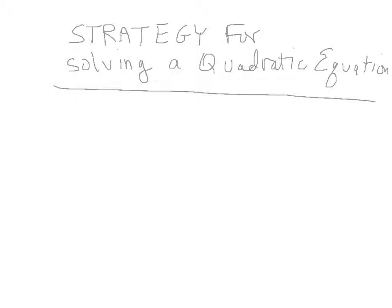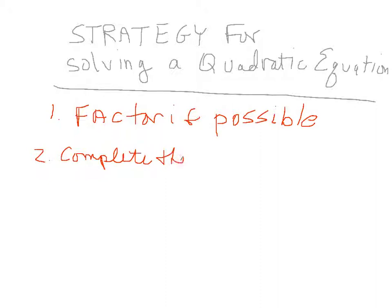So let's summarize what we know. There are basically three steps to the strategy for solving a quadratic equation. The first one is factor if possible. If we can't factor, the next step is complete the square. And this is best if my coefficient on x squared, which is a, is equal to 1.